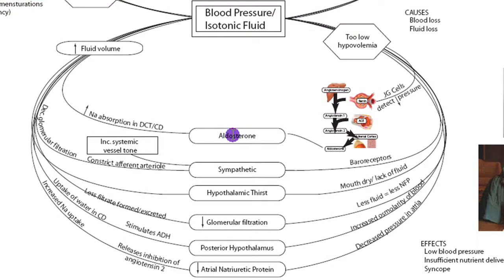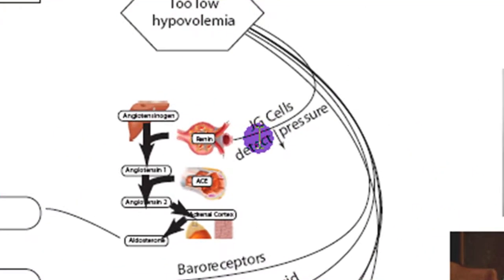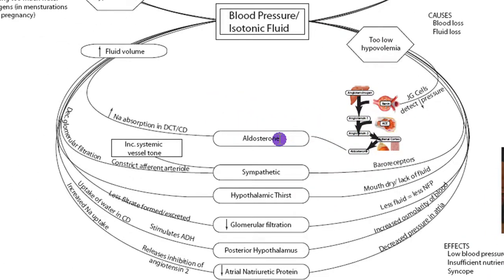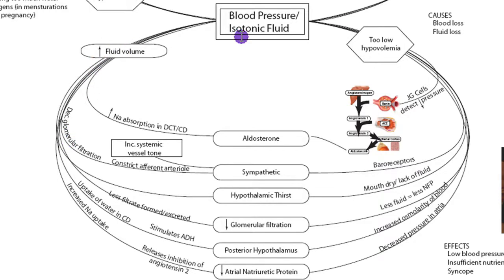The first of many mechanisms is aldosterone. In hypovolemia, the JG cells detect less stretch and less pressure, causing them to release renin, which goes through an entire cascade resulting in aldosterone, which causes sodium reabsorption to increase fluid volume. There are also baroreceptors in the carotid and aortic arch that signal to the sympathetic nervous system. The sympathetic nervous system can increase systemic vessel tone and constrict the afferent arteriole, decreasing glomerular filtration to retain fluid and restore blood pressure.